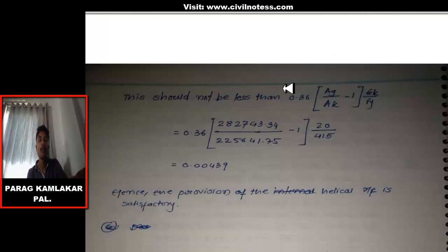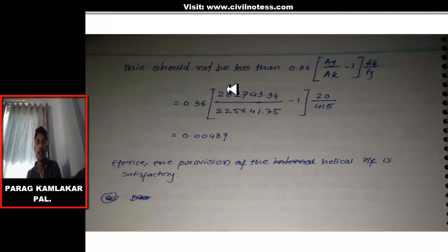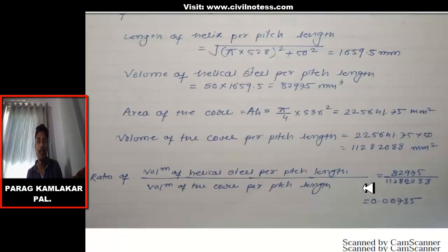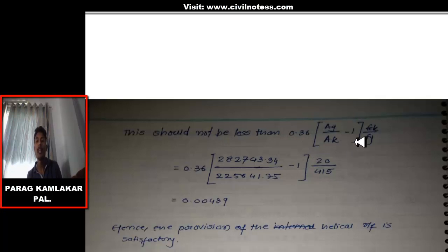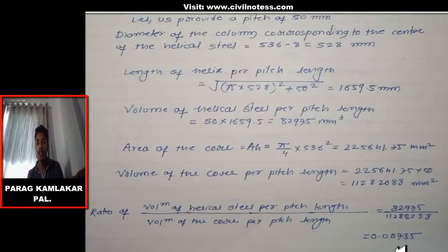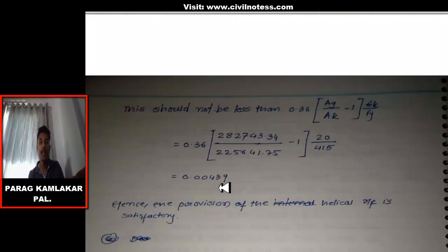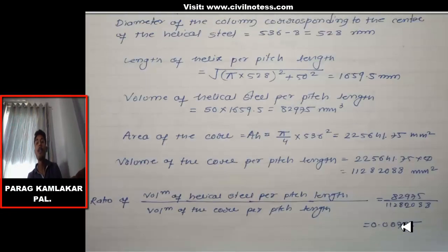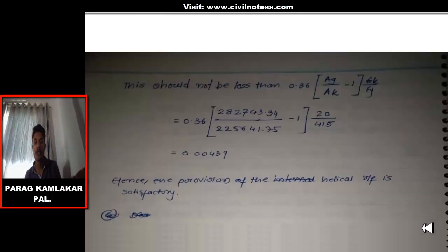This ratio should not be less than 0.36 × (Ag/Ak − 1) × (fck/fy). Substituting all values we get 0.00439. Since 0.00785 > 0.00439, the provision for helical reinforcement is satisfactory. If this condition were not satisfied, we would need to reduce the pitch to provide more helical steel.